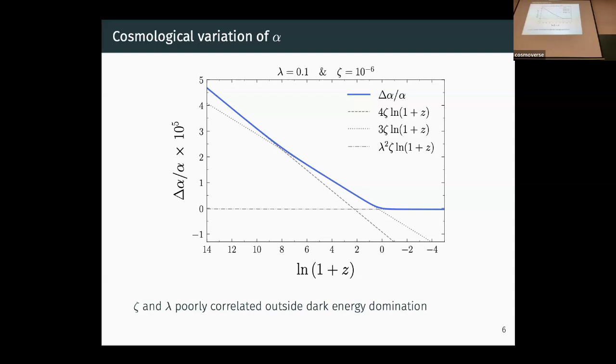The strongest evolution happens during radiation, then it slows down when matter takes over. Finally, it comes to a halt when dark energy starts accelerating the universe. The sign of zeta indicates whether alpha was stronger or weaker in the past. We also noticed that the two additional parameters are poorly correlated outside dark energy domination, unlike other existing cosmological models of the same type.